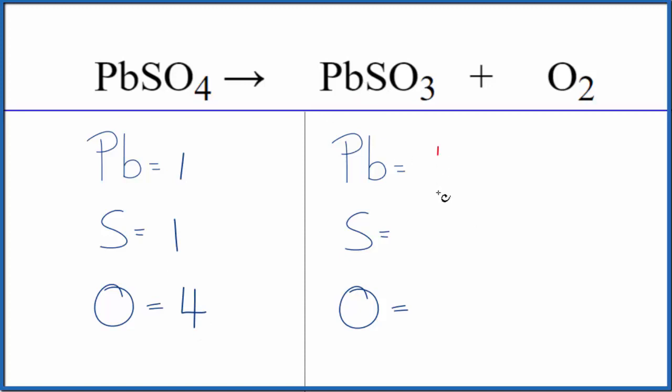On this side of the equation, we have one lead, one sulfur, and three oxygens plus the two oxygens in the O2. So that gives us a total of five oxygen atoms.